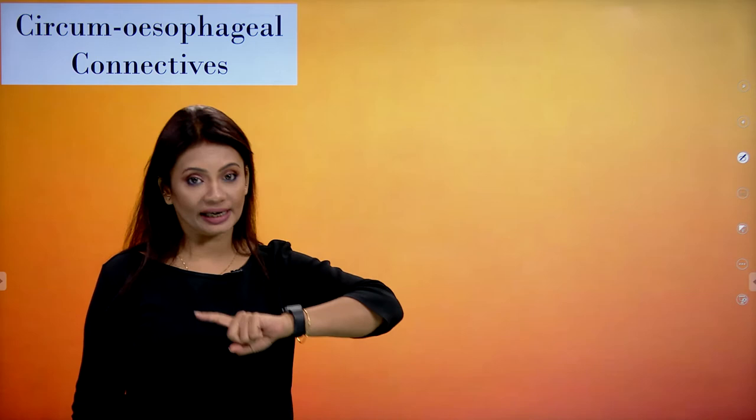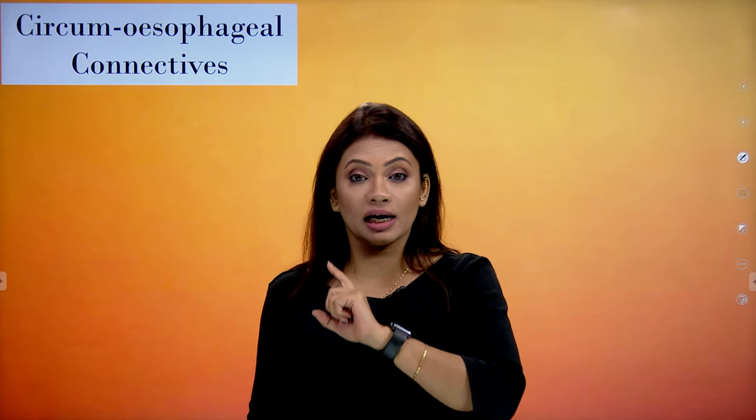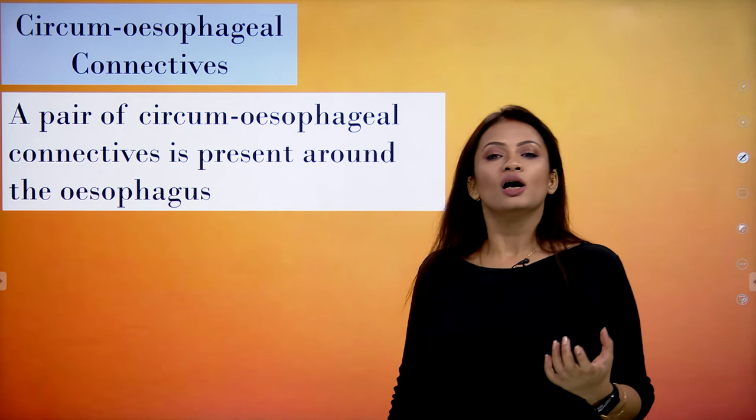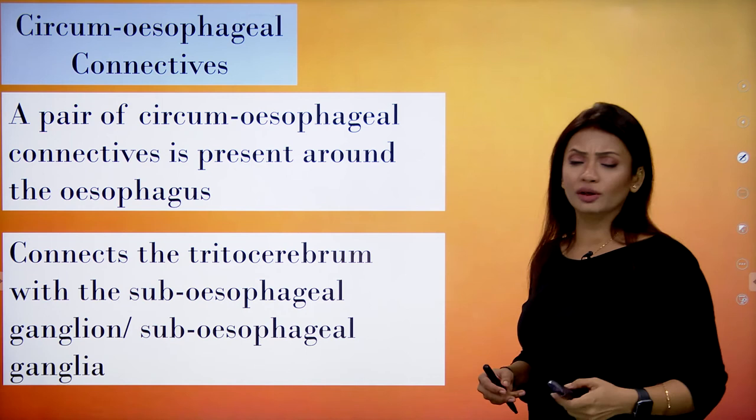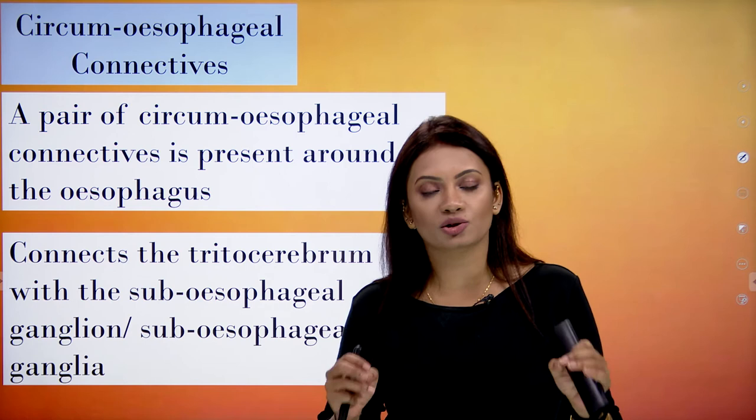Moving on to the circum-esophageal connectives — these are not called ganglions but connectives. They are structures placed around the esophagus. They are not doing sensory or motor activities; they are just doing the work of connecting.